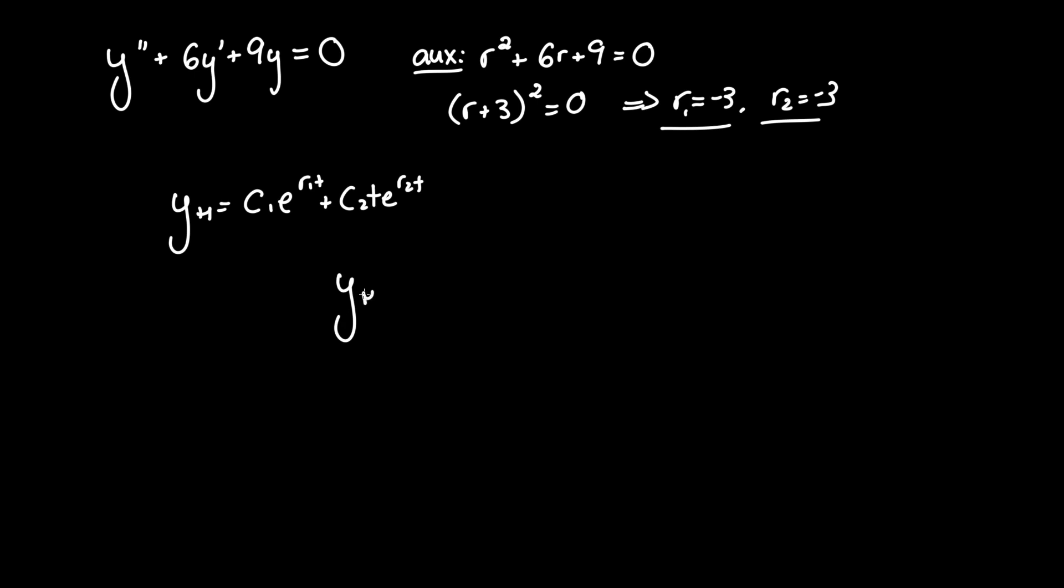Following that, we have our solution, yh, for y-homogeneous, equals c1e to the negative 3t, plus c2 times t, don't forget that, e to the negative 3t once more. And that is our answer.